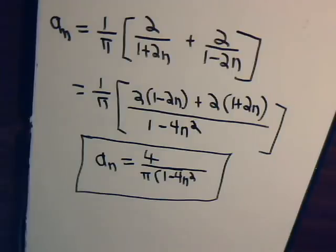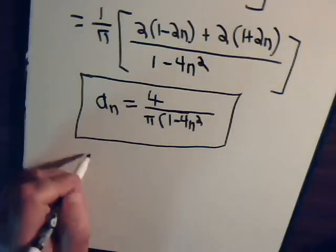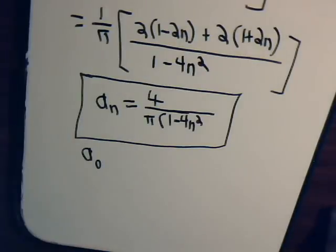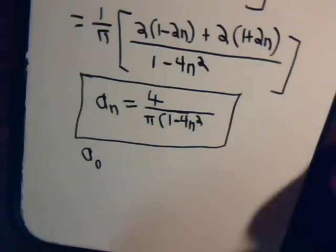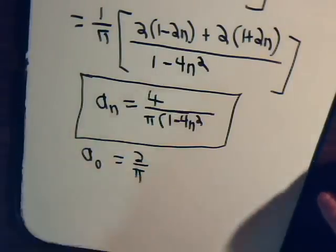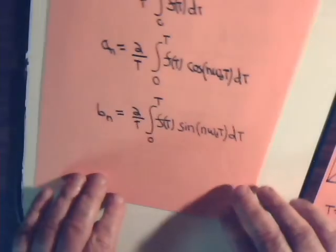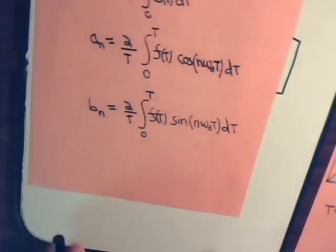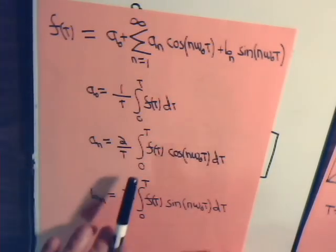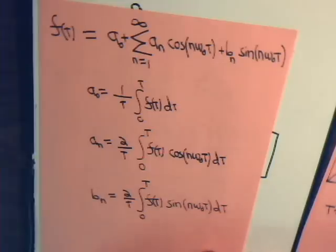Now all we need is our expression for b sub n, and then we can put everything together and derive our formula. And don't forget, a naught came out to be equal to 2 over π. I don't know if we have enough time in this video to figure out b sub n. So come back, join us in the next video. We'll figure out expression for b sub n, and we'll put everything together. Finally, we'll get our formula. So come back, join us for that video, and we'll finish off this project.